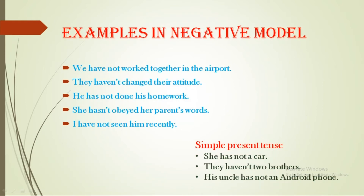The next one is the negative model. For negative, the structure is the same but we add 'not'. For example: 'We have not worked together.' 'They haven't changed their attitude.' 'He has not done his homework.' 'He hasn't obeyed his parents' words.' 'I have not seen him recently.'